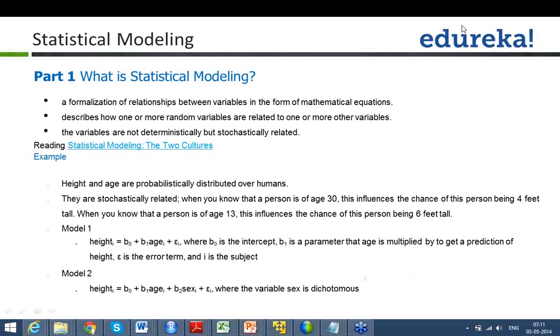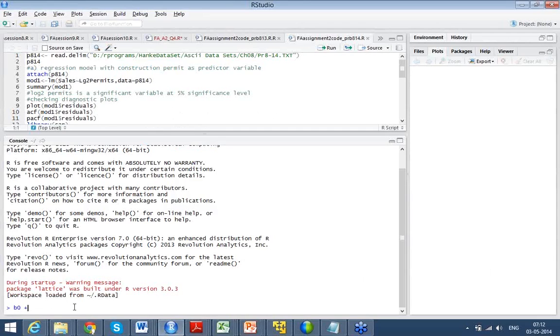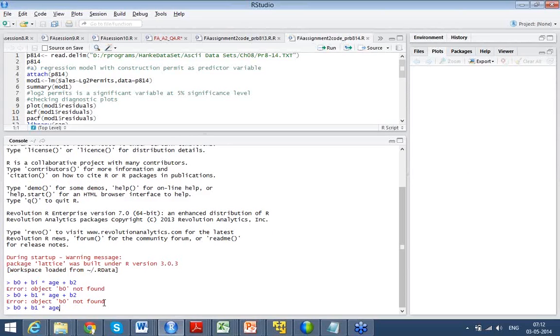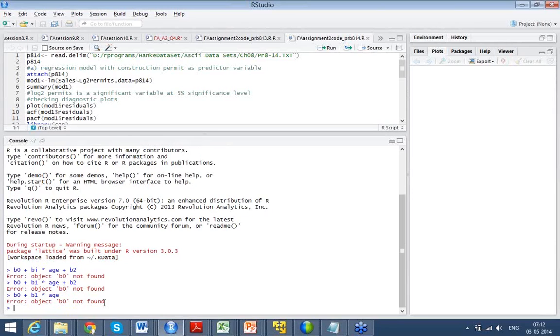In which case if this person is a male, I want to add some additional height. So then the sex variable can assume a value 1 or 0 - 1 if this person is male and 0 is female. So what will happen when it is male, then your sex variable will be 1, so your height equation will look like b0 plus b1 age plus b2, because your sex is 1. When the person is a female, then it will be b0 plus b1 age if it is female, because sex is 0. So basically I am adding a value b2.